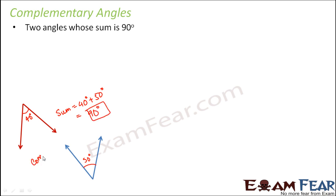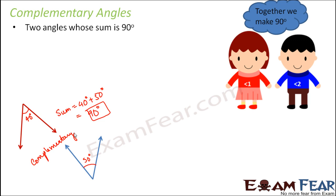Therefore, these two angles are complementary angles. So any two angles, if their sum is 90 degrees, they are complementary. So it is something like this. Two angles together.